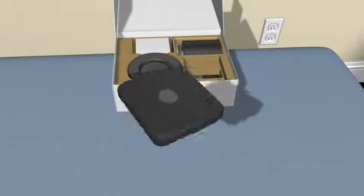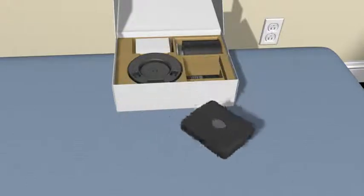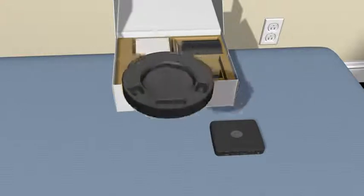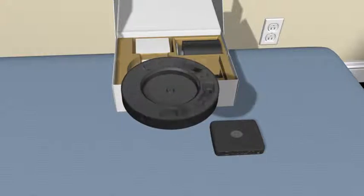Take the base unit, the rectangular box that says RevoLabs on top, out of the box and place it somewhere close to your phone and power outlet. Now take the charger base, the round piece, out of the box and place it close to a power outlet.